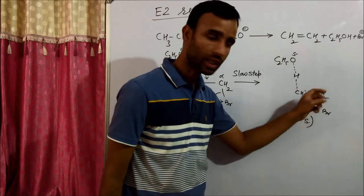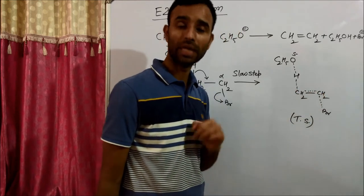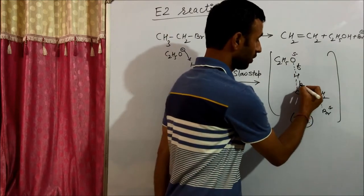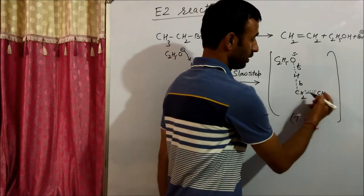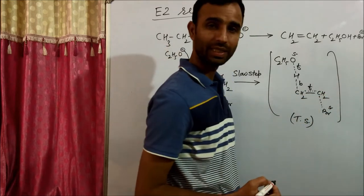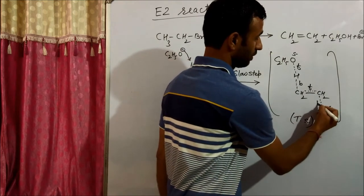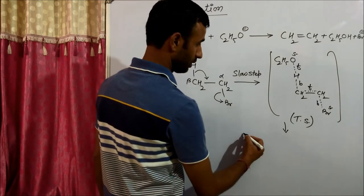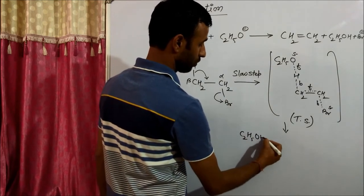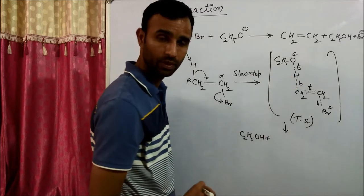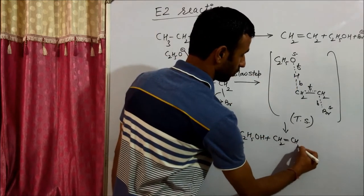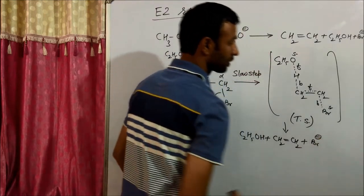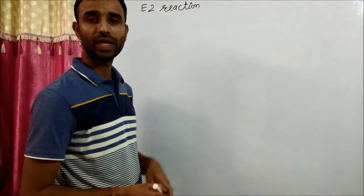C-C bond formation takes place and C-Br bond breaking. Formation of OH, breaking of C-H, formation of C=C and breaking of C-Br. We get C2H5OH plus CH2=CH2 plus Br negative.